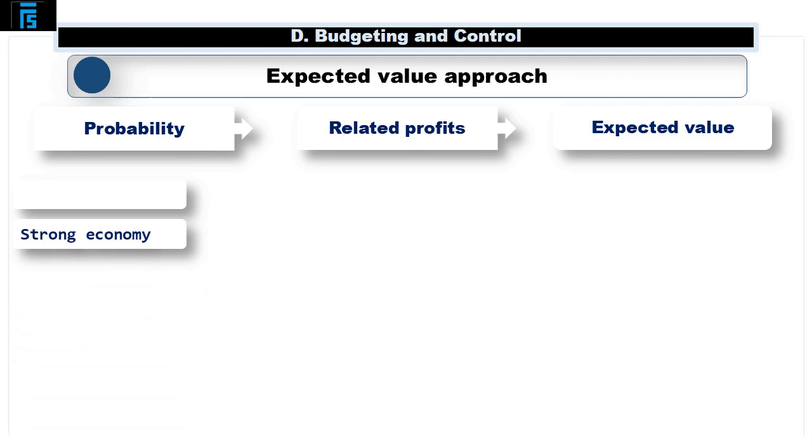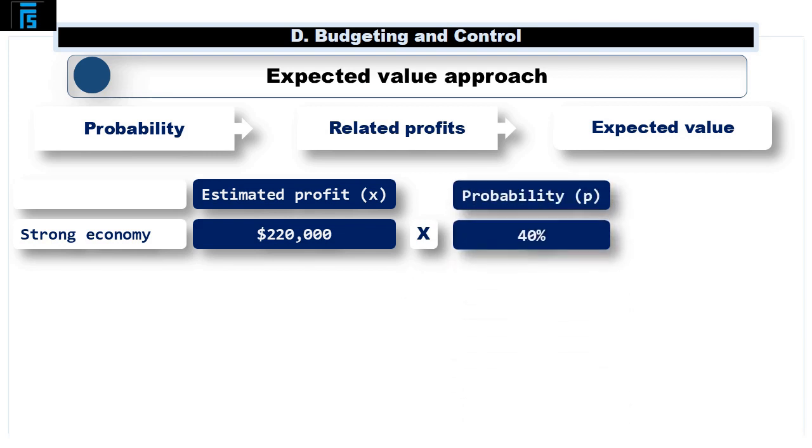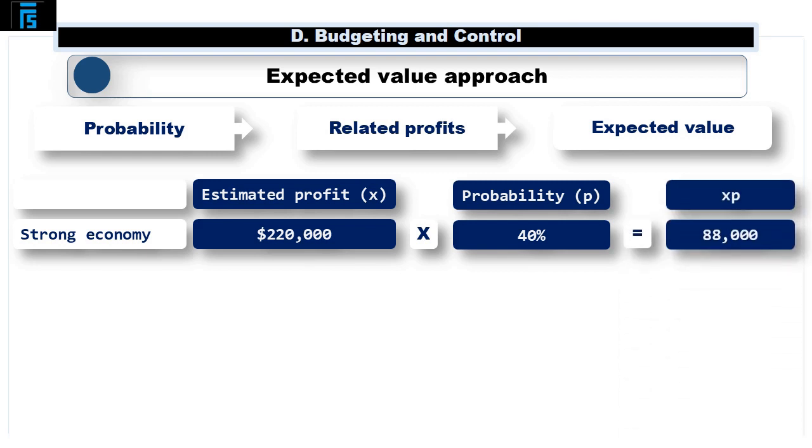So, given a strong economy, the estimated profit of 220,000, x, is multiplied by the 40% probability, p, of that profit arising. This yields a result of 88,000, being x multiplied by p.